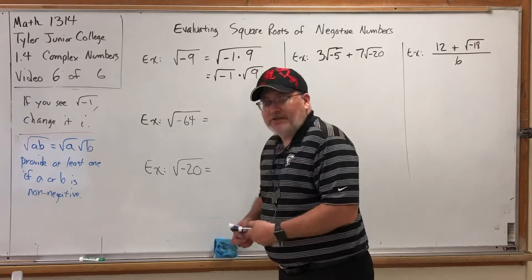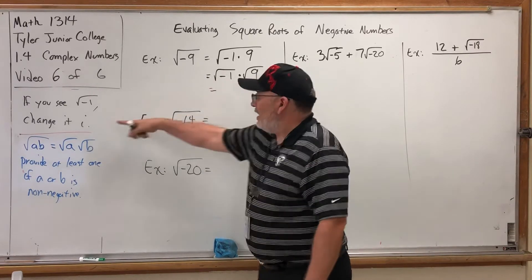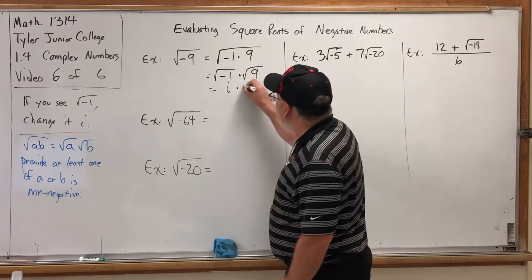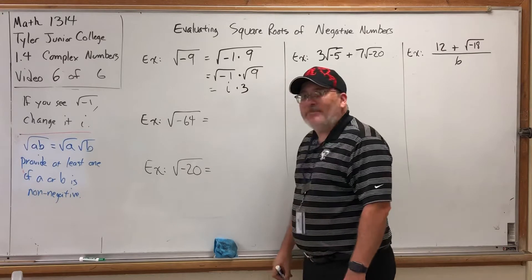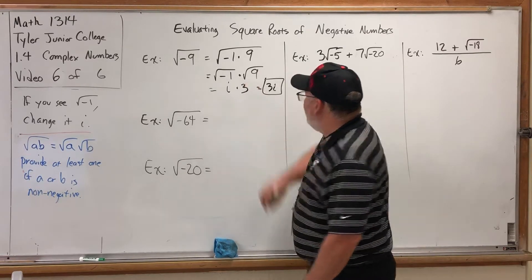Oh look, I see an i. I don't see an i. I see a square root of negative 1. But I'm obligated to change that to an i. And I know the square root of 9 is 3. And now I have i times 3. So I can just write that as 3i. And that's it.